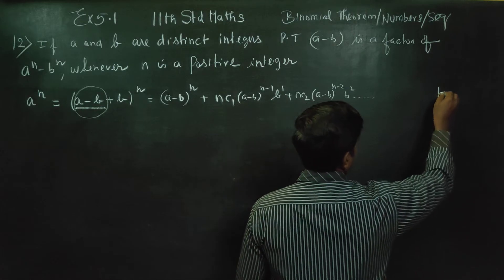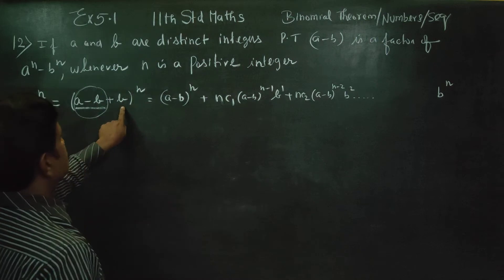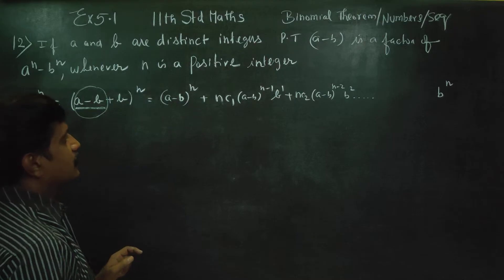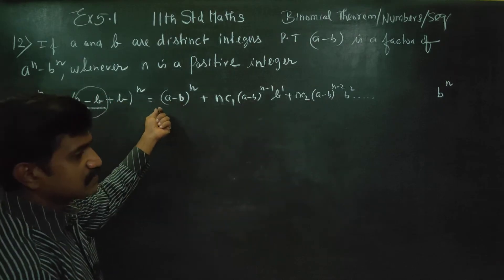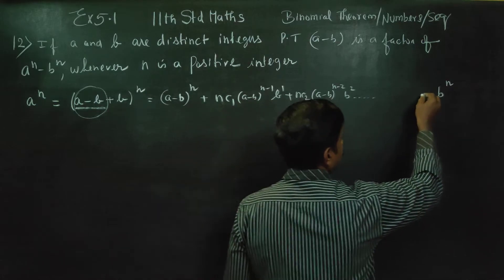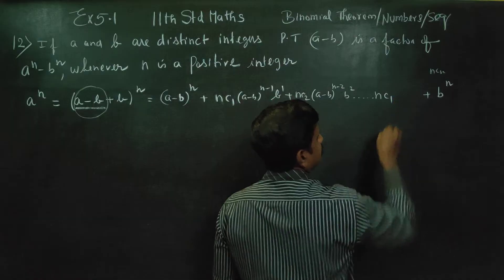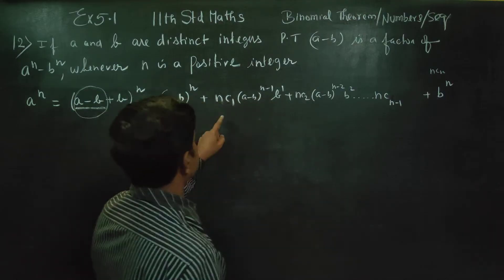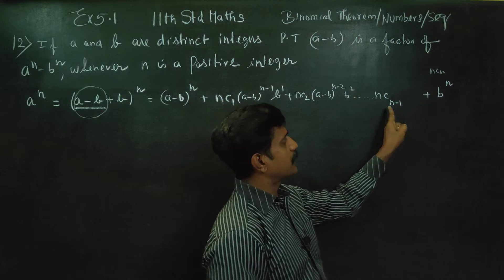Last term — this is a factor of B power N. This is a factor of A minus B power N. First term, this is a factor of A minus B power N. This is a factor of B power N. It is another factor N — this again is a factor of A power N, and this is a factor of B power N.